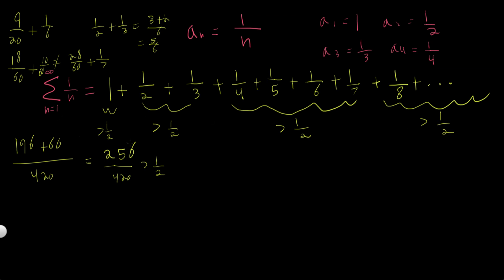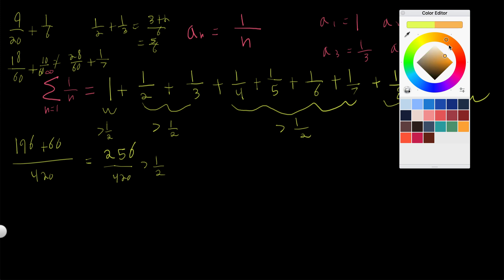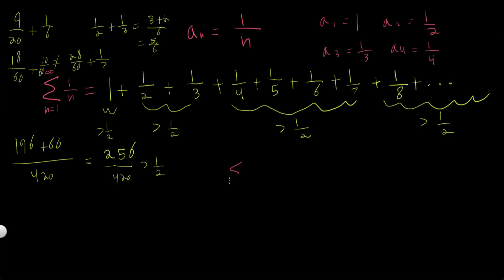So what we can do is we can write this summation, this harmonic summation, infinite summation, as this right here. So the sum from n equals 1 to infinity of a_n is equal to 1 half, right? Because we have 1 half there, plus 1 half, plus 1 half. And we can just keep getting however many 1 halves as we want, right?